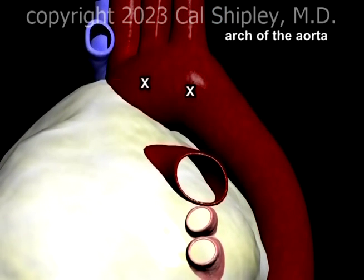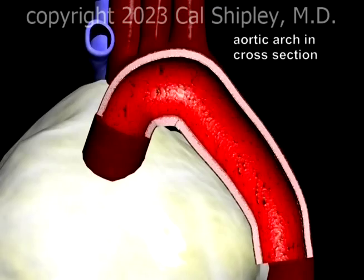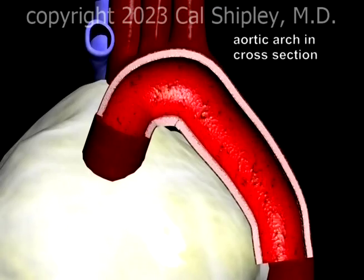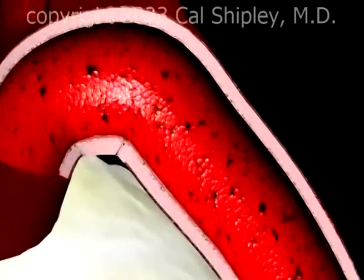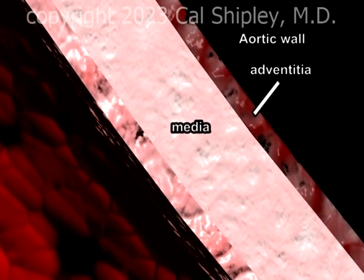At the top of the aorta is a curved section known as the arch. This portion of the aorta carries the greatest blood flow and is subjected to the highest blood pressure of any vessel in the human body. Taking a closer look at the aortic wall reveals a three-layer structure consisting of an outer layer, the adventitia, a middle layer, the media, and an inner layer, the intima.